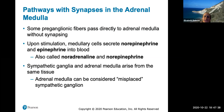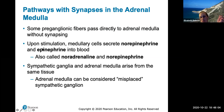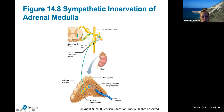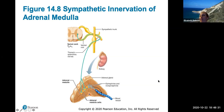Some preganglionic fibers pass directly to the adrenal medulla without synapsing. The adrenal medulla can secrete hormones that account for the adrenaline or stress response. These hormones — norepinephrine and epinephrine — are stimulated by the sympathetic division and released into the blood to increase the stress response. The adrenal medulla is part of the adrenal glands, which sit on top of the kidneys. Sympathetic nerve fibers innervate the adrenal medulla, causing release of epinephrine and norepinephrine into the bloodstream.